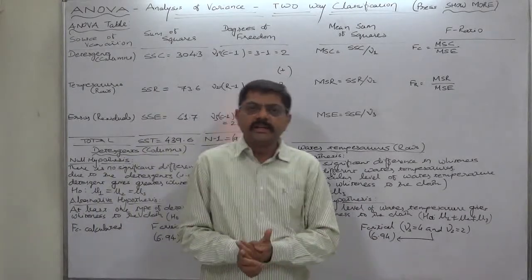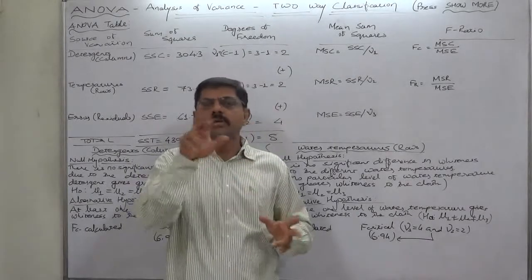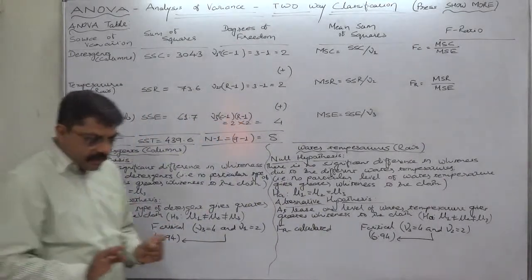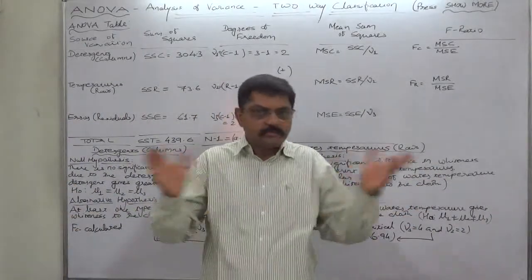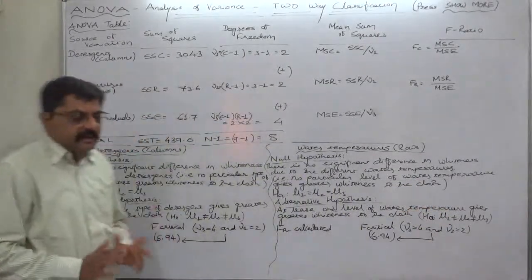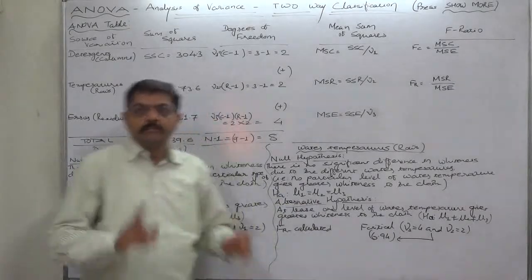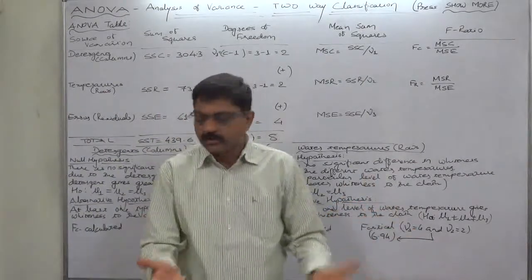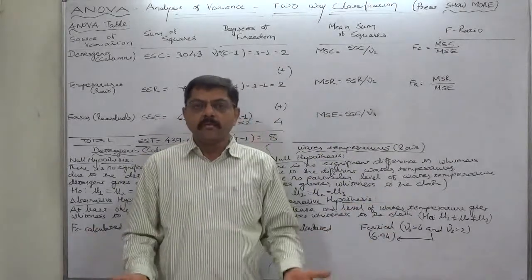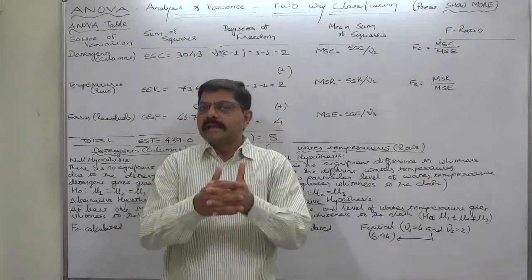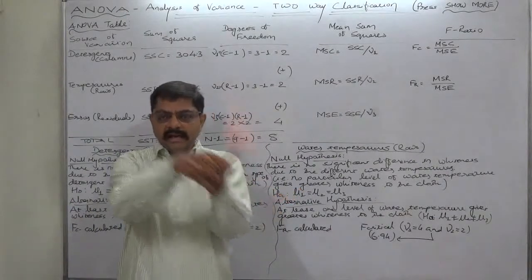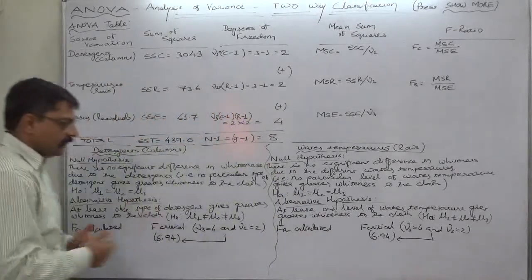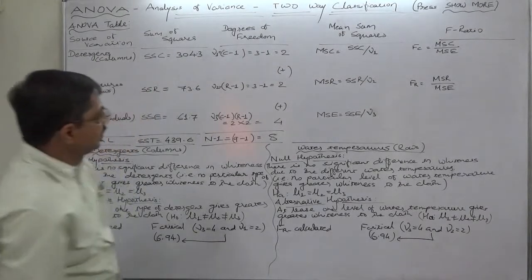The sign used to express the alternative hypothesis in ANOVA is 'not equal to,' which we normally use for a two-tail test, but the important thing is ANOVA is always one-tailed. Many reference books have not discussed this point, but it is a fact: at least one can be different — we cannot say all three should be giving better whiteness. Any one, two, or all three can give better whiteness, so we use 'at least one.' This is a one-tail test. Now let's complete the ANOVA table.